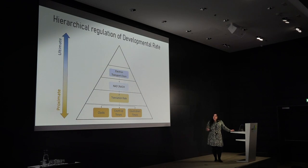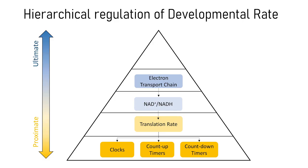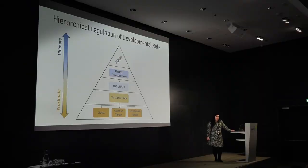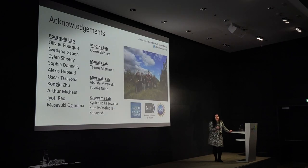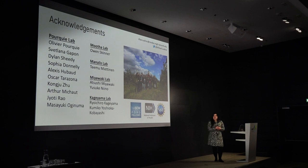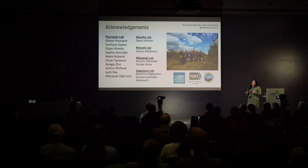Taking all of this together, we have filled out at least a little more of this regulatory cascade: clocks and timers are regulated by gene expression kinetics — particularly translation rate — which in turn are regulated by the NAD/NADH redox balance, which is set by the rate of the electron transport chain. There is still plenty of work to do, including identifying parallel mechanisms and the genome sequence differences between species responsible for these metabolic differences. I'd like to thank the Bereson Foundation, the IMP, my advisor Olivier Porquier, everyone in my lab, our collaborators, and our funding sources.